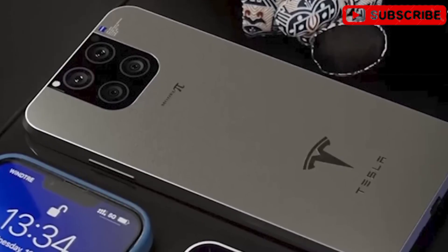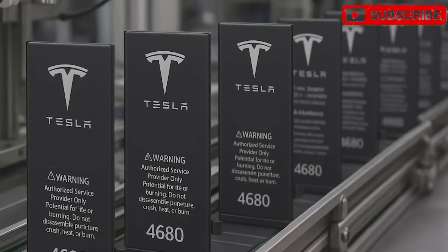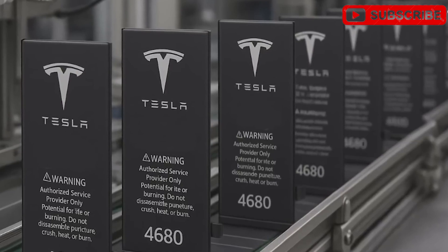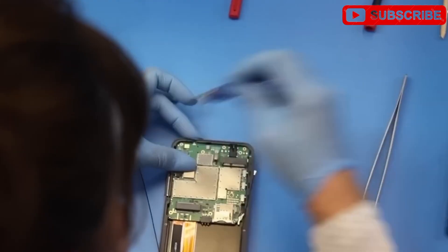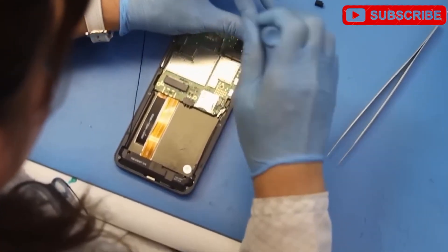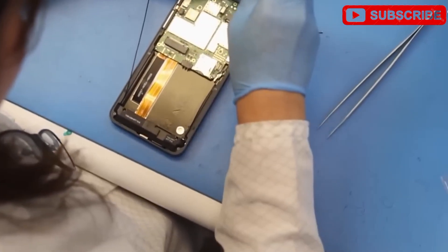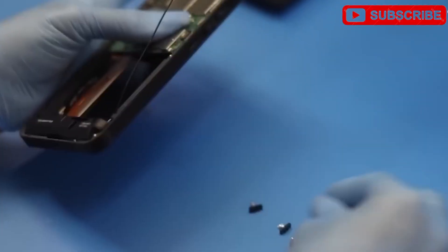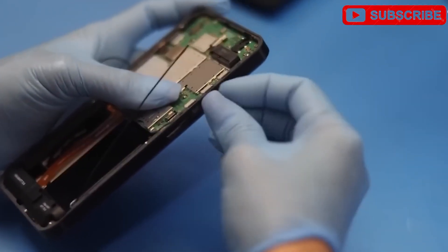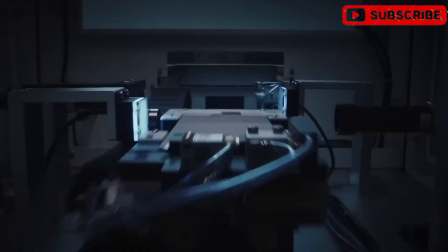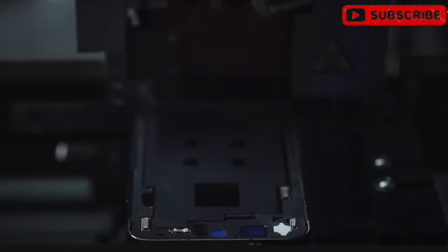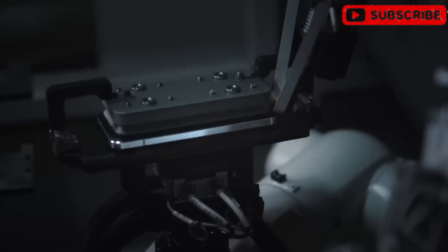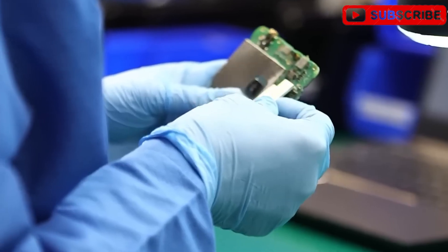Its body is crafted from grade 6 titanium alloy, the same material SpaceX uses for spacecraft. This isn't your average smartphone material. Titanium is 45% lighter than steel, twice as strong as aluminum, and non-magnetic, boosting wireless charging efficiency. While Apple's iPhone 15 and 16 Pro models use grade 5 titanium, Tesla's grade 6 alloy is 30% lighter than stainless steel and can survive an 11-foot drop onto concrete with minimal scratches, compared to an iPhone's 6-foot limit. This phone is built to last, not just to look pretty.